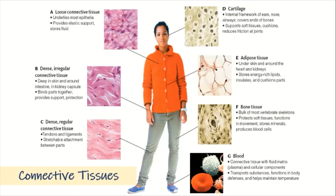Bone tissue protects soft tissues, functions in movement, and is responsible for the production of blood cells. It also stores minerals. We also have adipose tissue — simply your fat — found under the skin and around the heart and kidneys. It stores energy-rich lipids and provides insulation for the body.